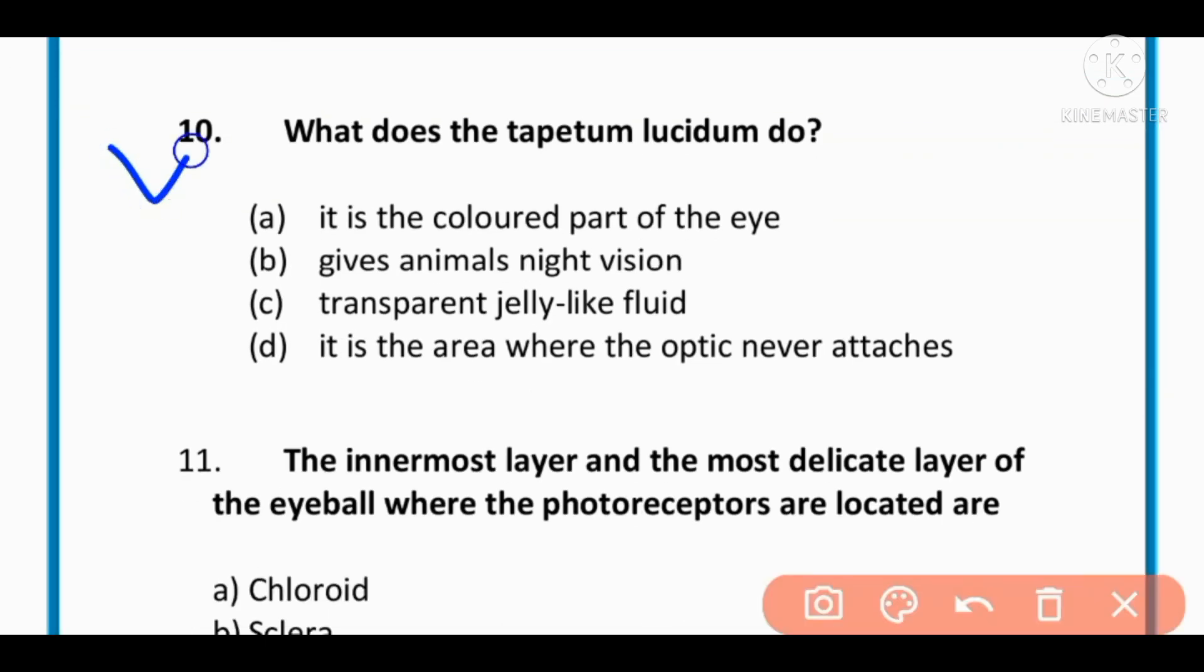MCQ number 10: What does tapetum lucidum do? It is the colored part of eye, gives animals night vision, transparent jelly-like fluid, or it is the area where optic nerve attaches. The correct option is B: gives animals night vision.